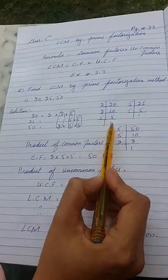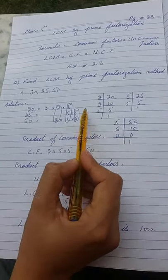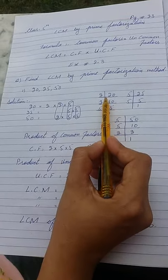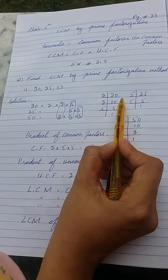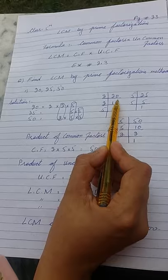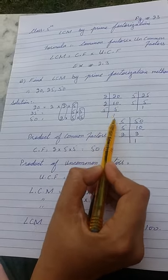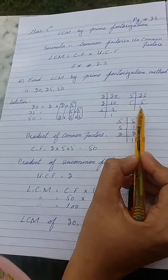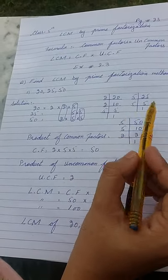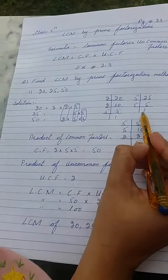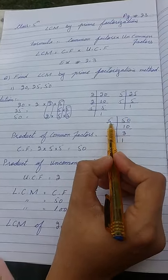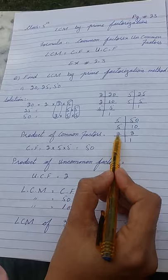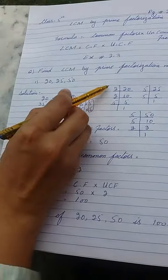First of all, we will find the prime factors of each of these three numbers separately. For 20: 2 × 10, then 2 × 5, giving factors 2, 2, 5. For 25: 5 × 5, giving factors 5, 5. For 50: 5 × 10, then 5 × 2, giving factors 2, 5, 5. We divide until we get 1 in the remainder.